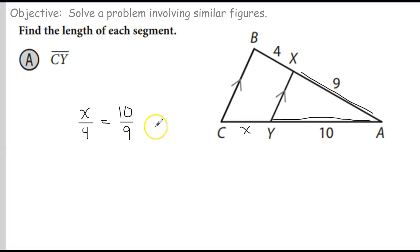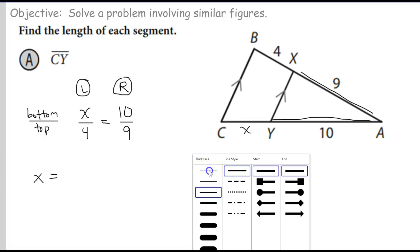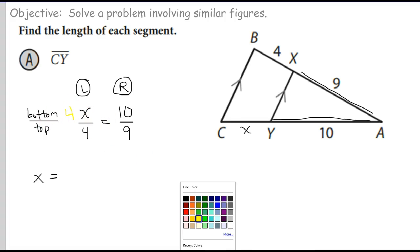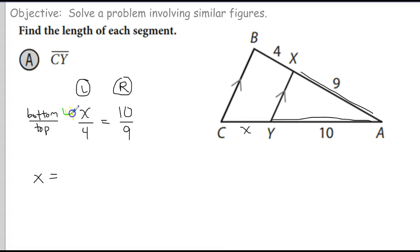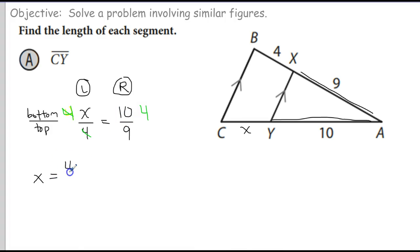Notice this always makes a two-dimensional array. I can label this: bottom to top on one axis, and left-hand sides to right-hand sides on the other. When I solve this, the 4 comes up. We multiply by 4 on both sides of the equation. The 4 cross-cancels on the right, so X is equal to 10 times 4, which is 40 over 9.